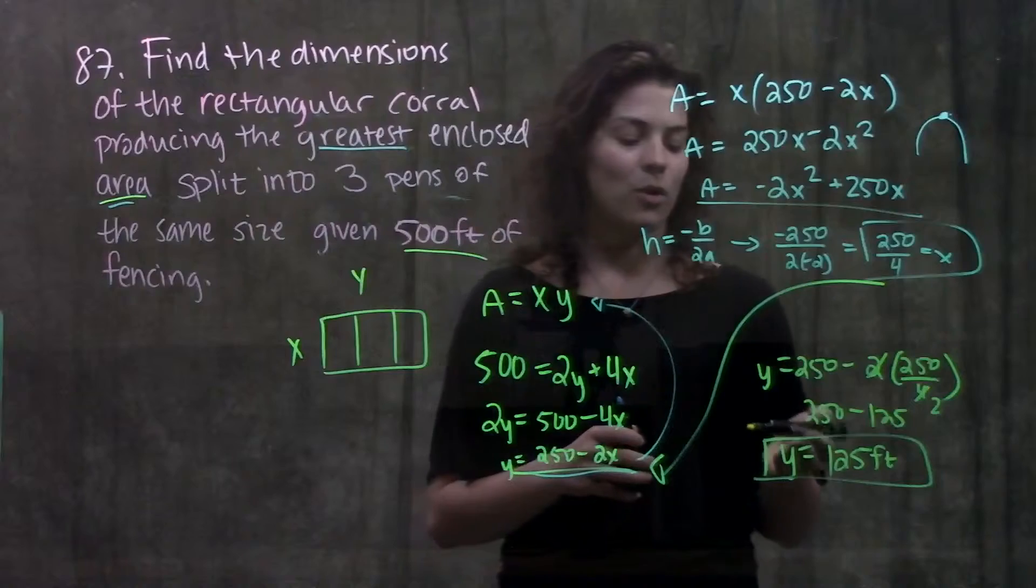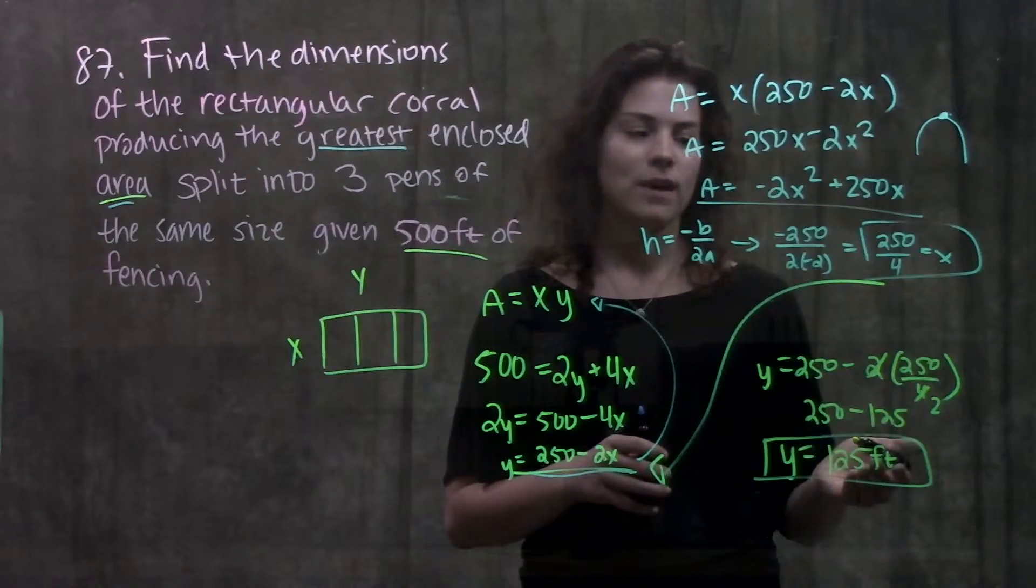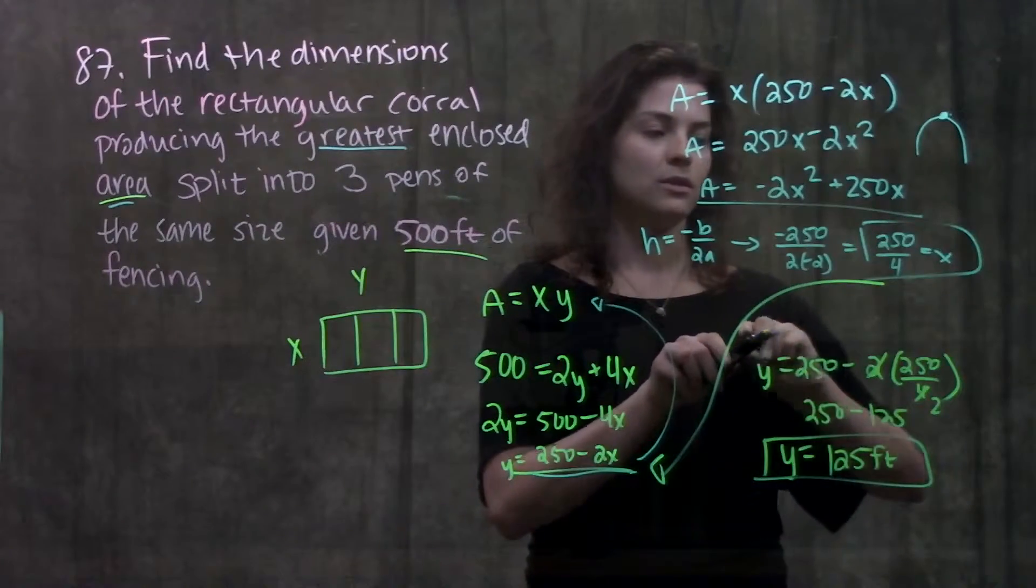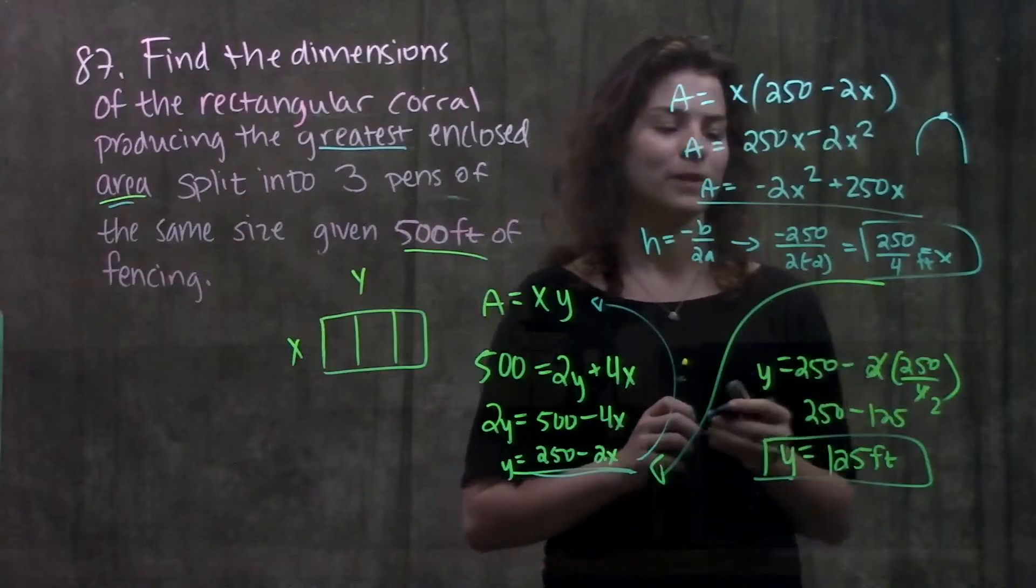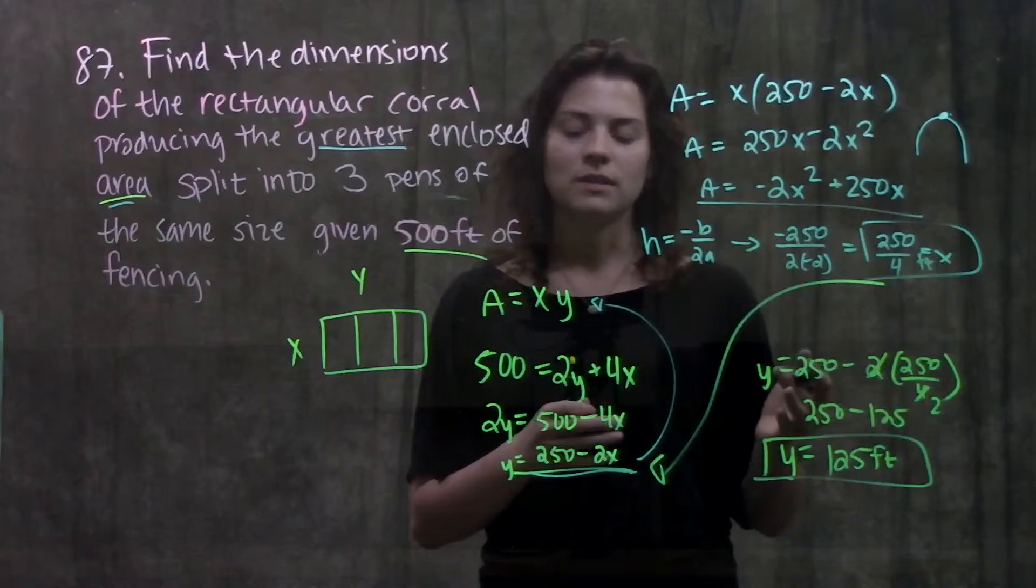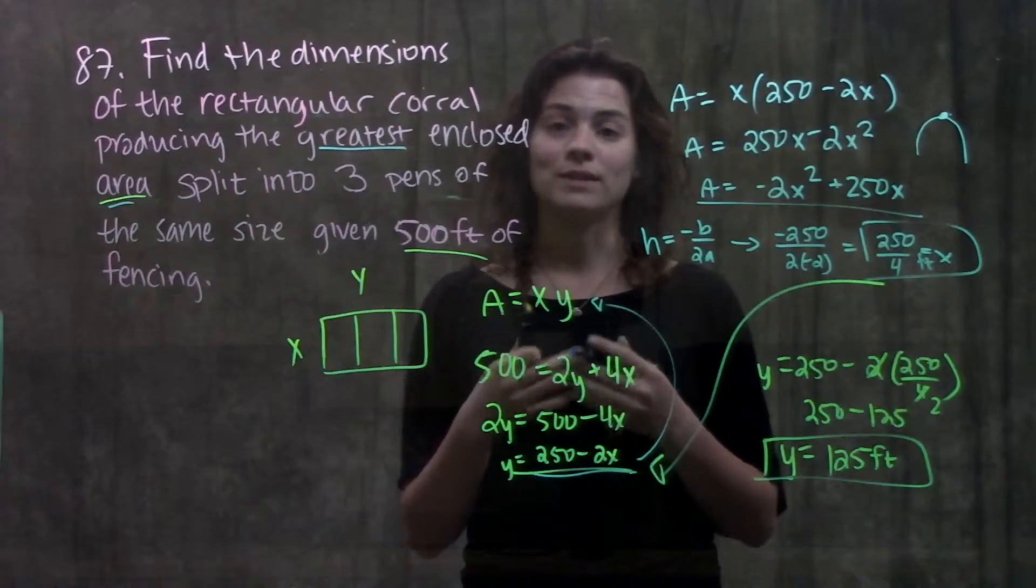And that's it. So our y dimension that we found was 125 feet. Our x dimension was 250 over 4 feet. Remember units because it's actually a word problem. And these dimensions of our rectangle will give us the maximum area.